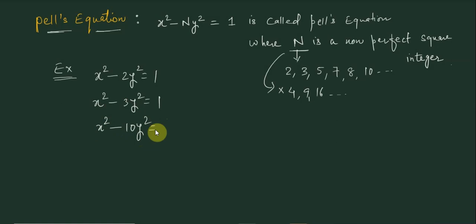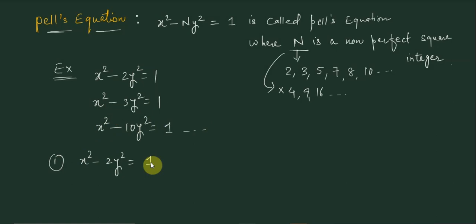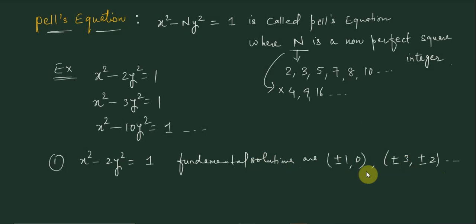How do we solve Pell's equation? We look at the solution of Pell's equation. Considering the first example, x² - 2y² = 1, by trial and error we can find the fundamental solutions. The fundamental solutions are (±1, 0) and (±3, ±2).